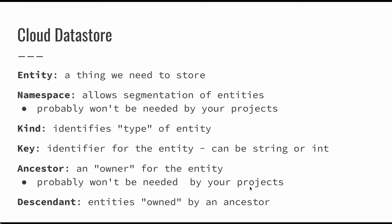A couple of terms we'll need to think about when we get into Cloud Datastore. One is entity. An entity is the thing that we need to store — some particular object. If you're used to databases, you can kind of think of an entity as a table, but it might be a little bit more appropriate to think of it as an object. Basically, an entity is going to be a key-value structure, sort of like a dictionary in a lot of ways.